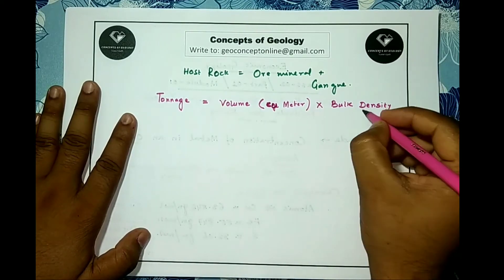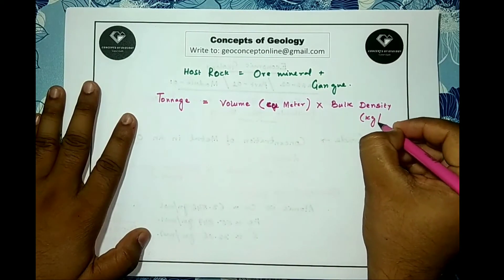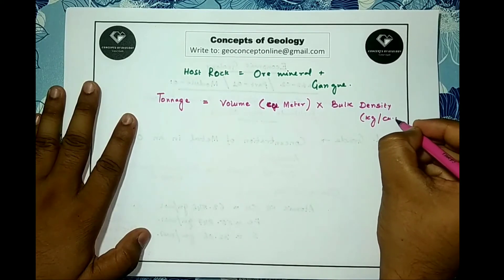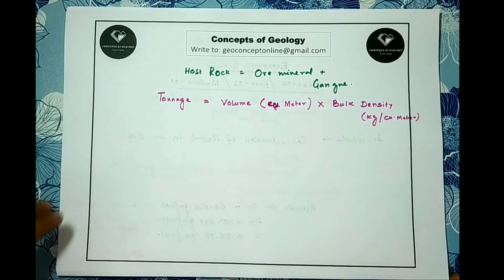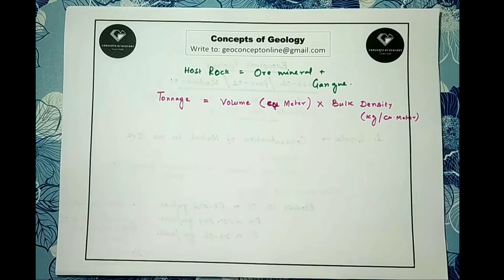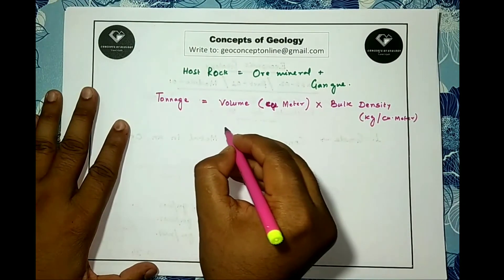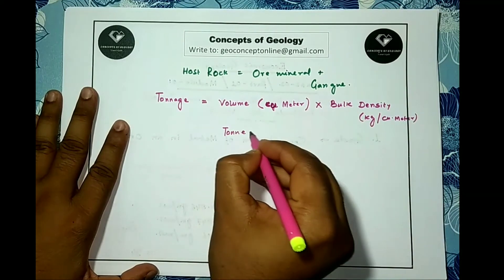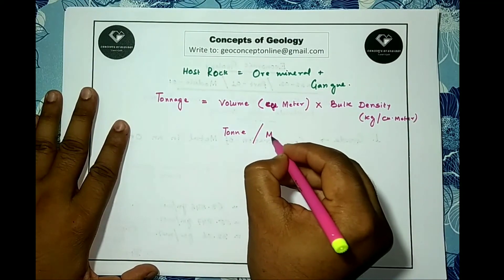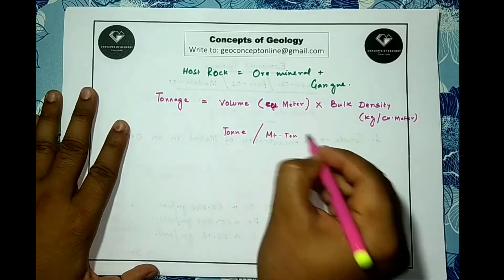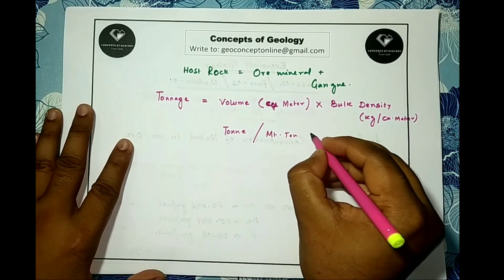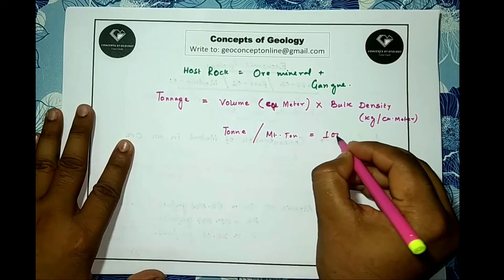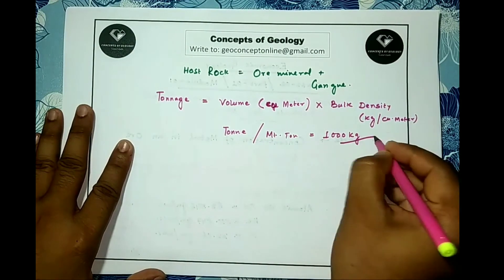Bulk density is also in SI unit, that is kg per cubic meter. We will express the unit of tonnage as ton or metric ton. This is equal to 1000 kg.